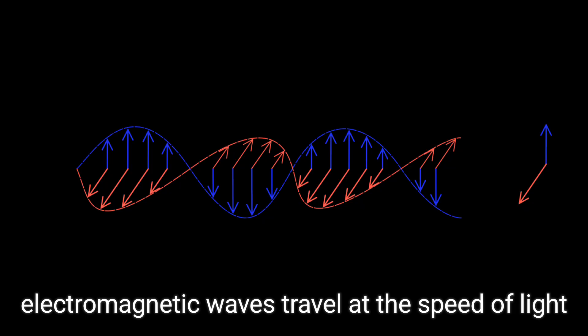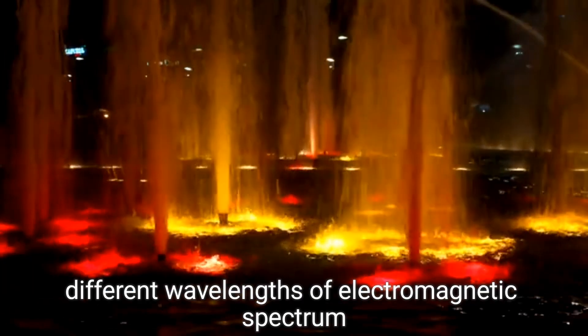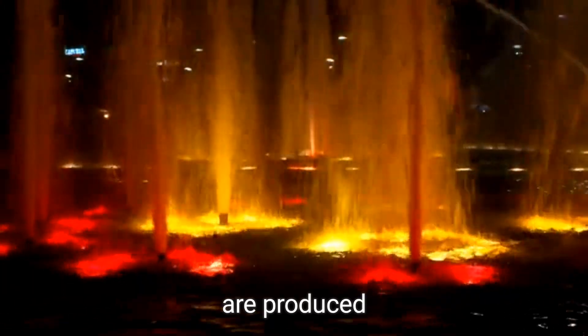Electromagnetic waves travel at the speed of light, and depending on the frequency of oscillation, different wavelengths of electromagnetic spectrum are produced.